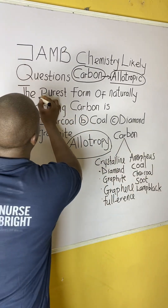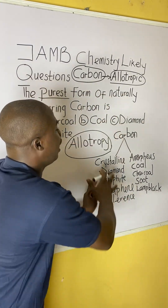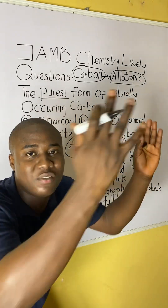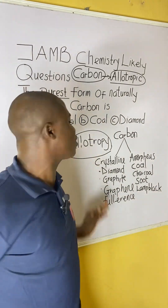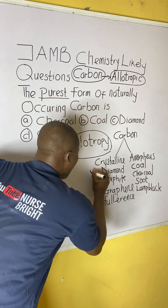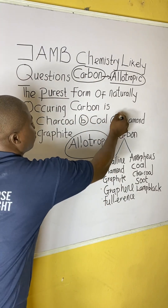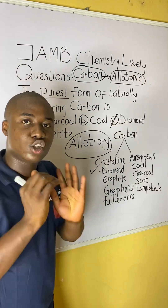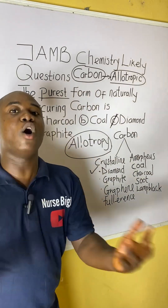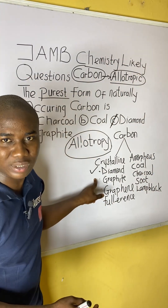They are asking us the purest form of naturally occurring carbon. These are the different examples of naturally occurring carbon, and out of them, the purest is diamond. So, the answer to this question is option C. Others are still pure, but the purest of them all is diamond.